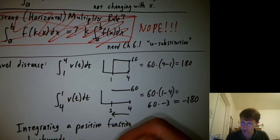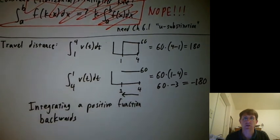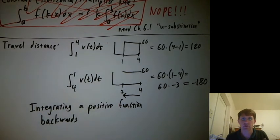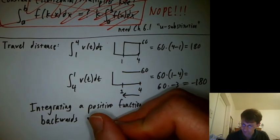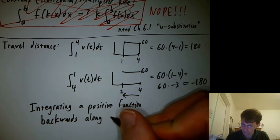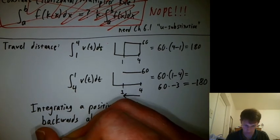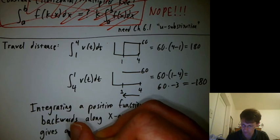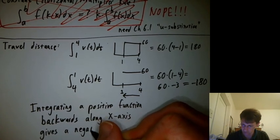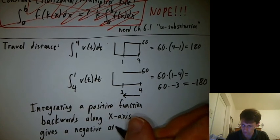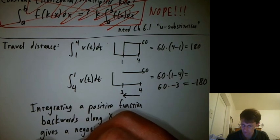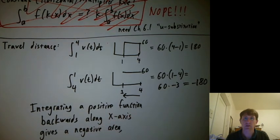So I mean backwards along the x-axis, not backwards like antiderivative versus derivative, because the width is negative.